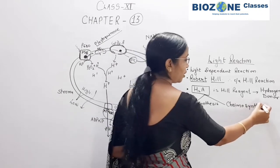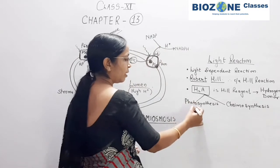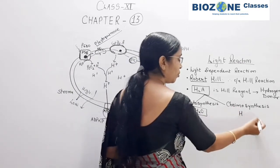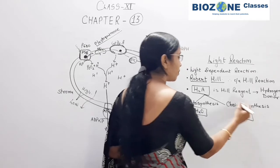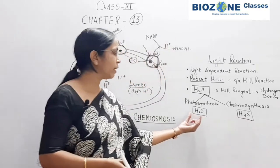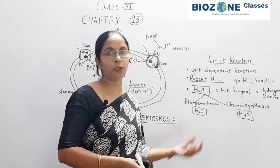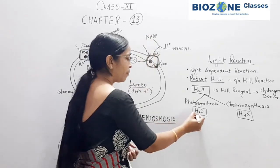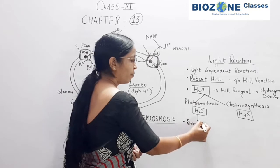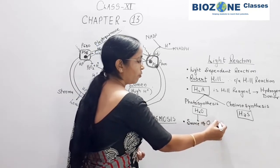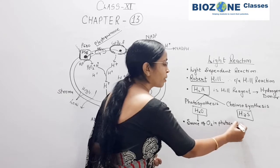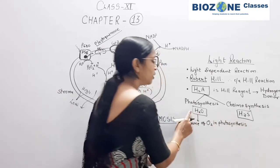In photosynthesis, the hill reagent is H2O, whereas in chemosynthesis — as performed by chemo-autotrophic bacteria such as purple sulfur bacteria — H2S is the source of hydrogen donor. In photosynthesis, the water molecule is used. One of the most important questions: the water molecule during the light reaction is a source of oxygen in photosynthesis.